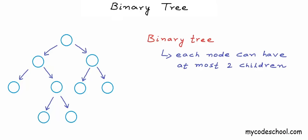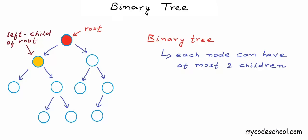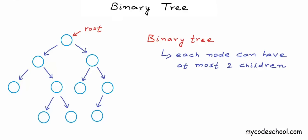In a binary tree, each node can have at most two children. In this tree, nodes have either zero or two children, but we could also have a node with just one child. We call one of the children the left child and the other the right child. A node may have both left and right child, or it can have just one — either left or right.